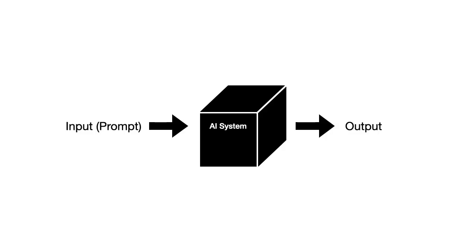However, because we can't see the process, it's important to make sure there is always a human in the loop, reviewing and checking the output. Let's look at the three stages of using a generative AI tool such as ChatGPT, Gemini or Copilot.